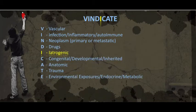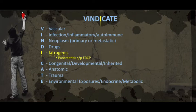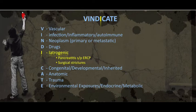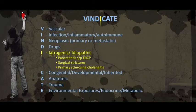Next we have I, which is for iatrogenic. The most common cause being pancreatitis status post-ERCP, which can further cause a post-hepatic obstruction. Surgical strictures can also occur during ERCP. There are also idiopathic causes, including primary sclerosing cholangitis, which would fit that category. You may also think of PBC, which is primary biliary cirrhosis — I'm not sure if that's idiopathic, but since I don't know what causes it, to me it is idiopathic.